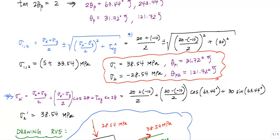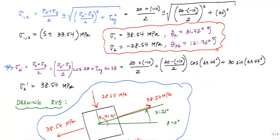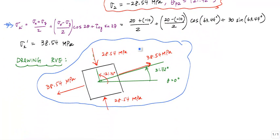And bam, you would get sigma 2. And then you'd be done. And then you just have to draw the representative volume element out. No need for Mohr's circle now that you have a fancy-schmancy calculator.